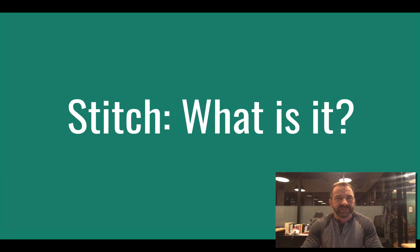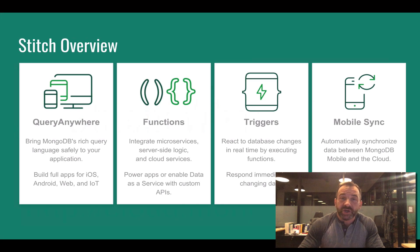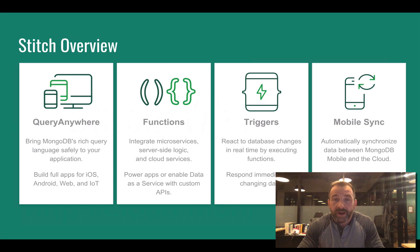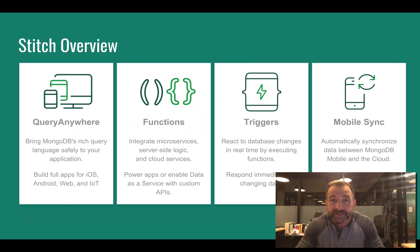We're also going to talk about MongoDB Stitch. It's a backend as a service. Stitch gives you the ability to query your MongoDB resources from anywhere — whether that be from an application running on an iOS device, an Android device, from the web, or for your IoT implementation. It gives you access to functions. These functions can live within Stitch in a sort of a functions-as-a-service model, similar to AWS Lambda or Azure Functions. We also give you the ability to leverage triggers, so within Stitch you can react to changes taking place in your database. For example, if you want to trigger an SMS text message as a result of an insert, you can do that right from within Stitch using triggers.